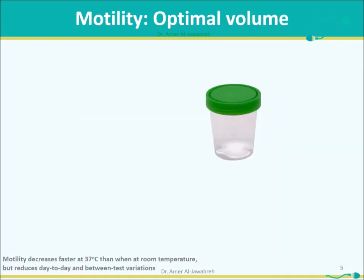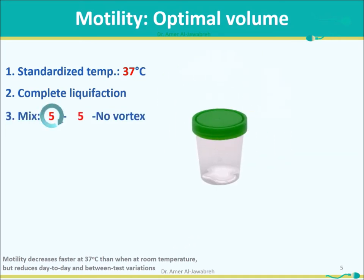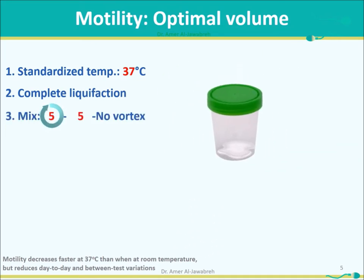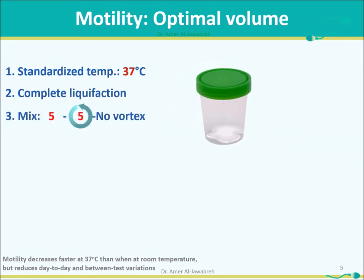For motility assessment, use an optimal volume and place the sample in an incubator set to 37 degrees centigrade. Wait for complete liquefaction, then mix the sample 5 times to the right and 5 times to the left.